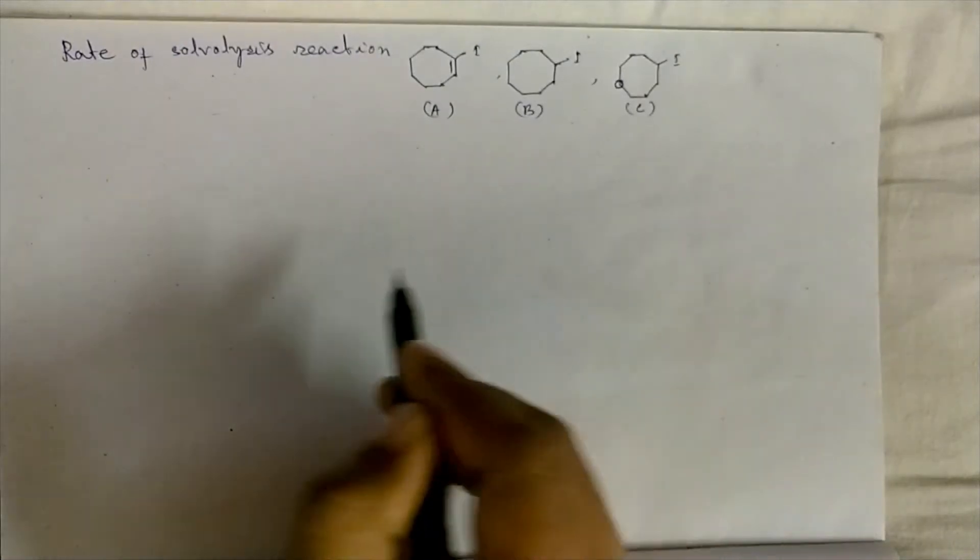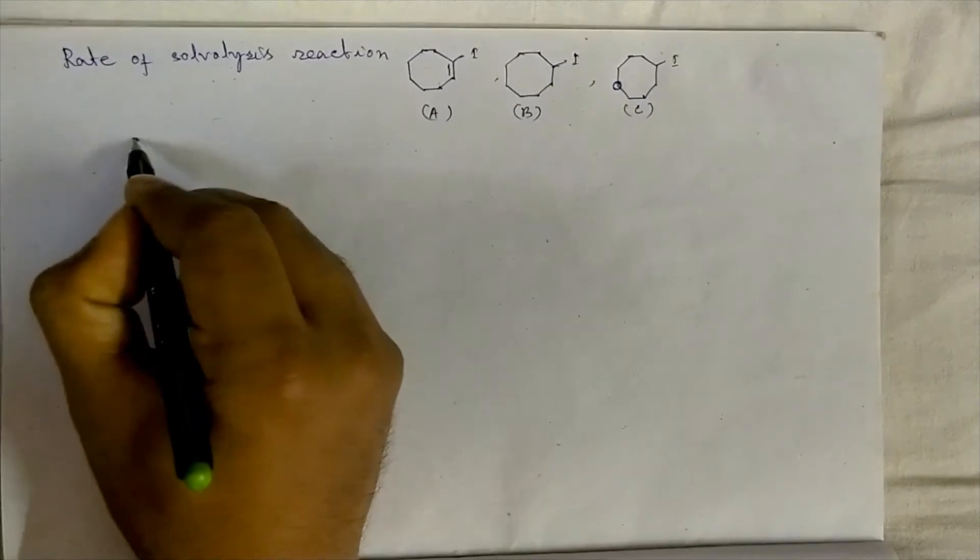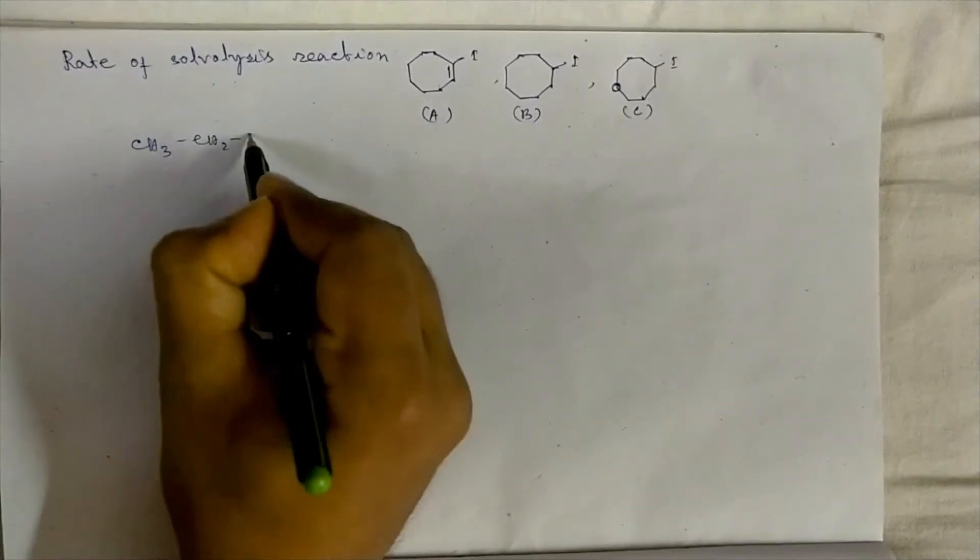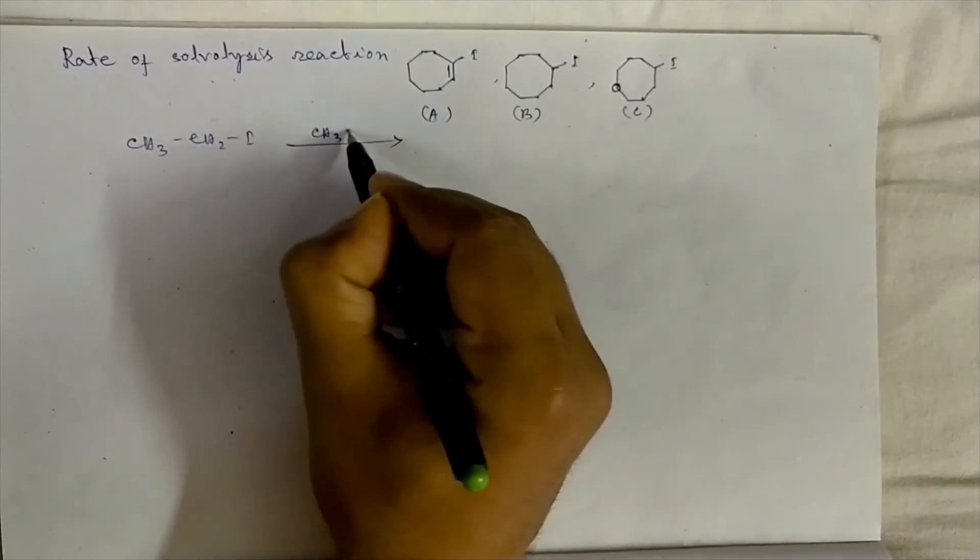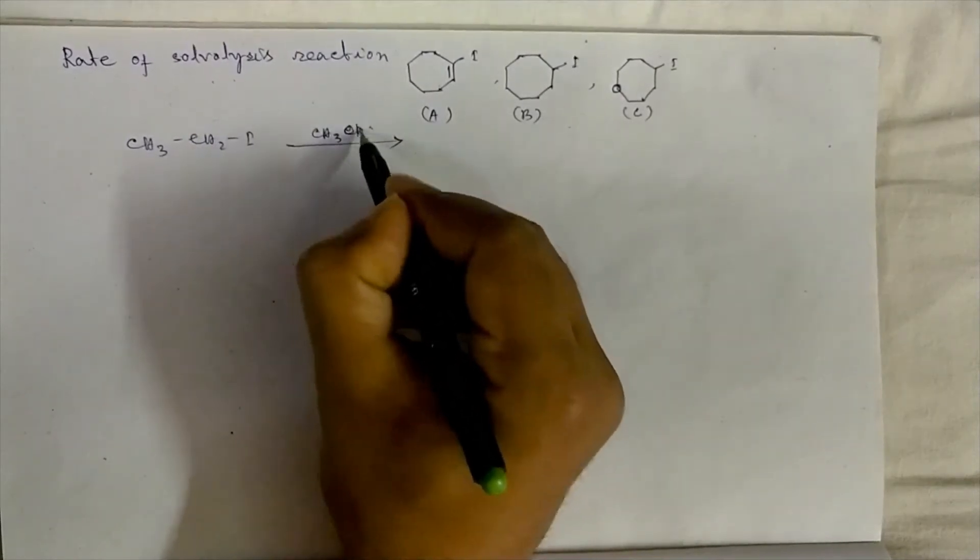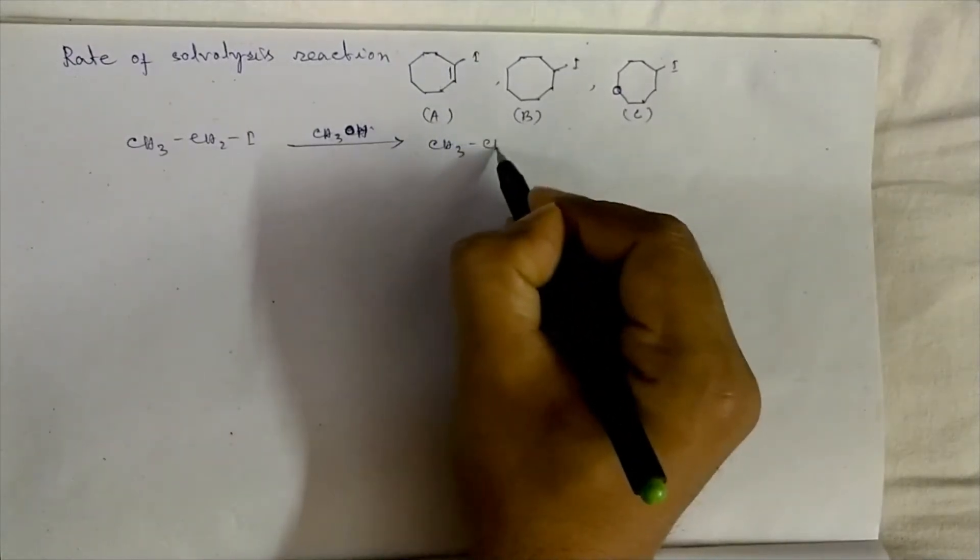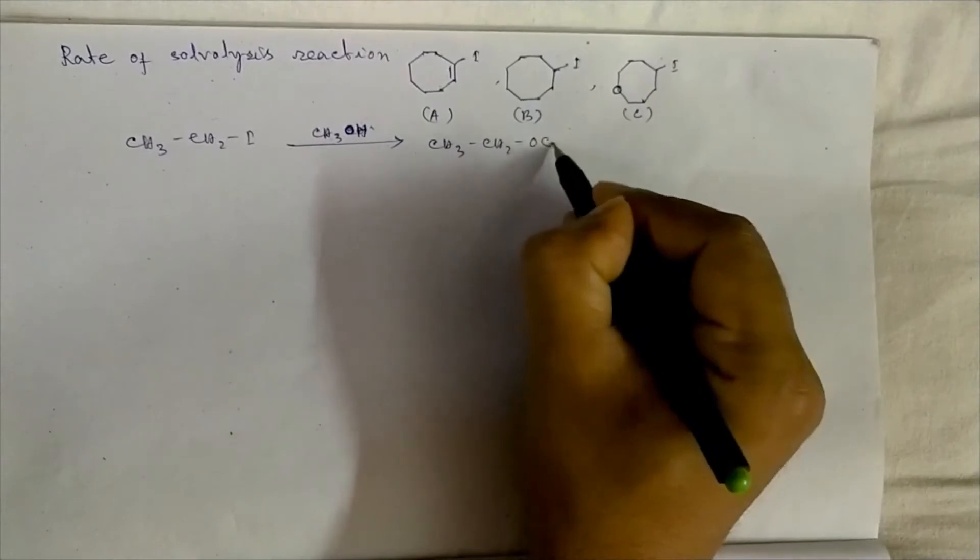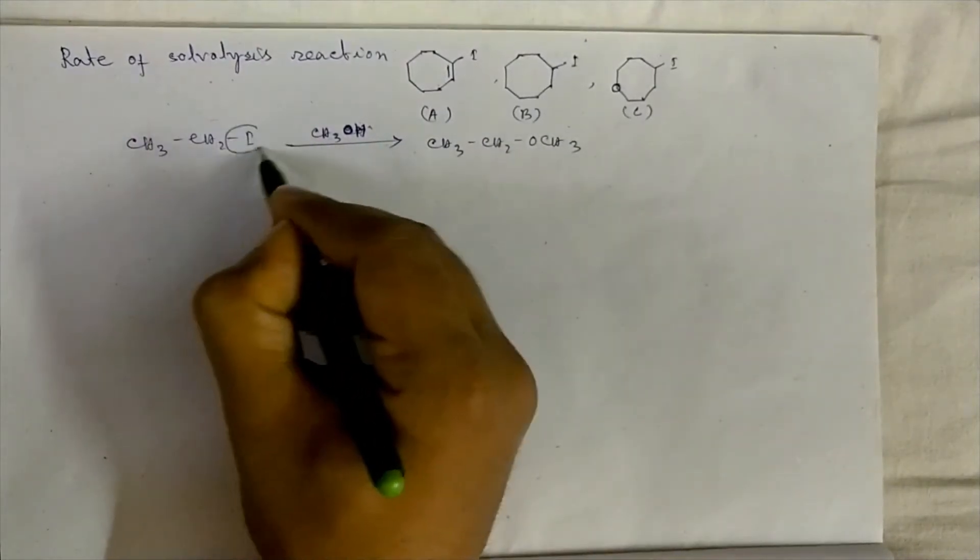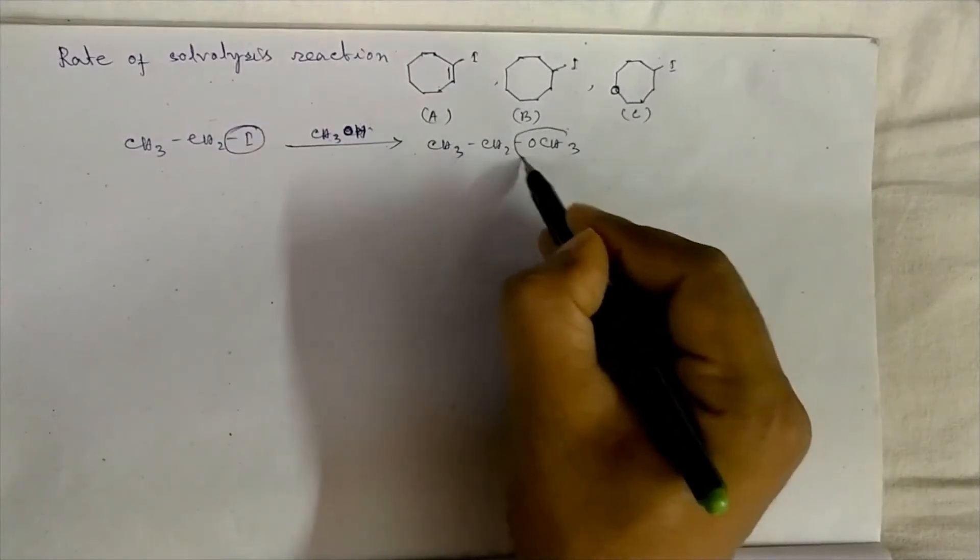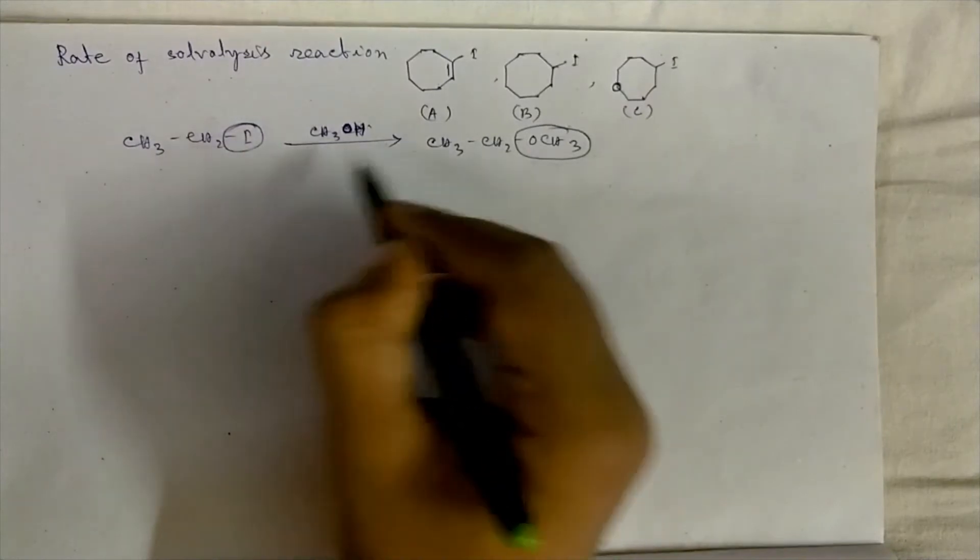by the solvent molecule. If we take one example, it will be like this: CH3CH2I, that is iodoethane, in methanol CH3OH will produce methoxyethane. Here the iodide atom is substituted by OCH3 group, so it is a solvolysis reaction and